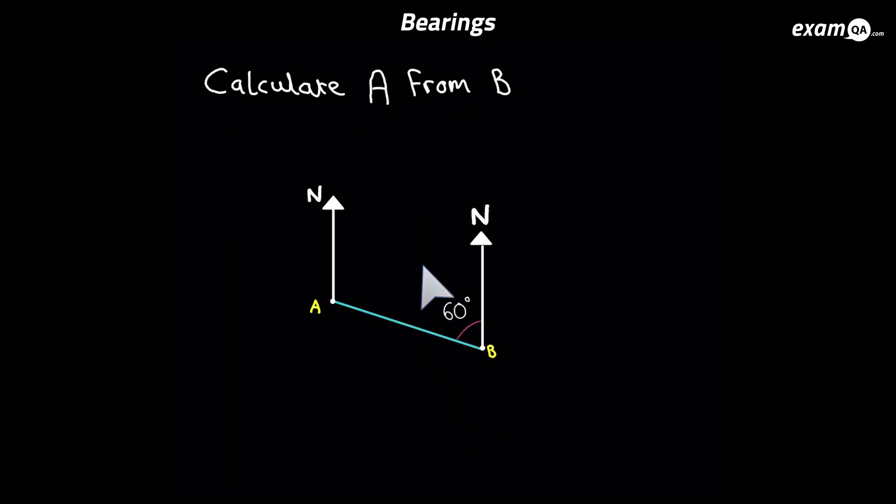Okay so here we've got a question. Calculate A from B. So remember A from B means it's from B's north line. So you must start at B's north line. So it's this angle here. You start at B's north line, turn until you're facing A.